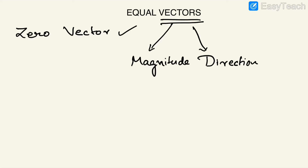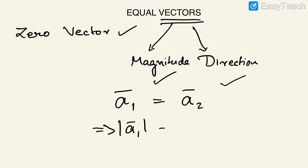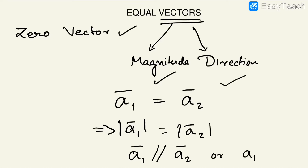Equal vectors means both of them should be equal. Suppose we have vector a1 and another vector a2 — they are equal means, first of all, their magnitudes are the same, and their direction is also the same, which means a1 is parallel to a2, or the unit vectors representing the direction are parallel to each other. This is the magnitude and direction form.